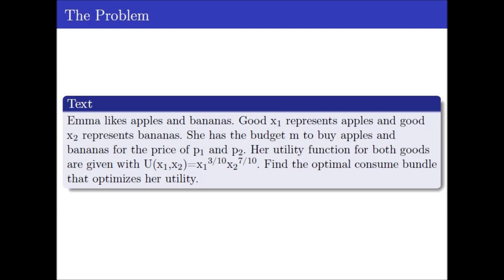Her utility functions for both goods are given with U(x1, x2) = x1^(3/10) * x2^(7/10). Find the optimal consume bundle that optimizes her utility.